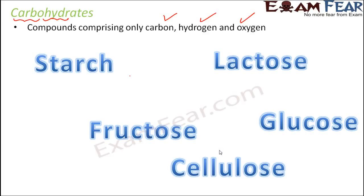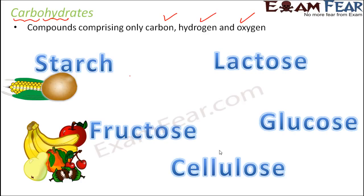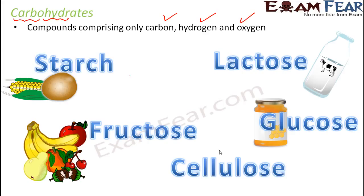Different types of carbohydrates are present in different products. Starch is present in high amounts in food items like potatoes, maize, and cereal grains — they are a very rich source of starch. Fructose is present in fruits — that's why the name fructose. Lactose is present in milk, so milk also is a source of carbohydrates — it not only provides calcium but also carbohydrates. Glucose can be found in honey. Cellulose is found in plants, especially the green leafy vegetables we obtain from plants.